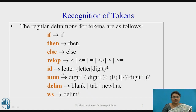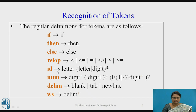Similarly, for an identifier the pattern is letter followed by (letter or digit)*. Every identifier starts with a letter and may have letter or digit combinations. So the token generated for an identifier is ID. For a simple numeric constant with exponential and fractional values, the token num is returned.